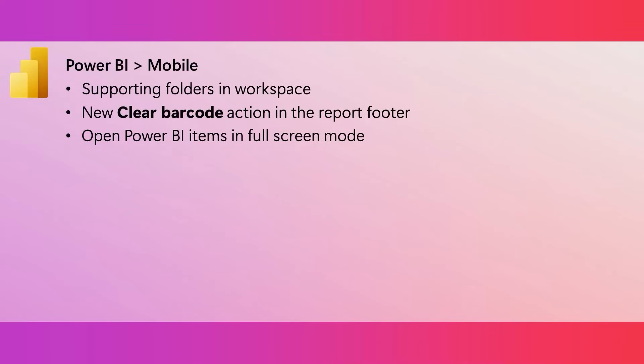Power BI mobile apps now support folders and workspaces. Just remember, these folders can contain a variety of Fabric items — some are related to Power BI and some are not, so the mobile apps will only show you the Power BI items. If a report has a barcode field, you can use a phone camera to scan the barcode on an object and that will cause the report to filter based on that barcode. This is really useful in retail scenarios, for example, because you can be looking at some object and then find all the information about it — like inventory information or sales data — easily in the Power BI report.